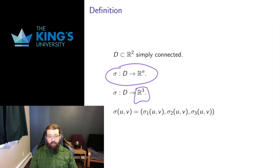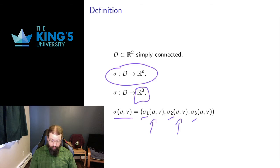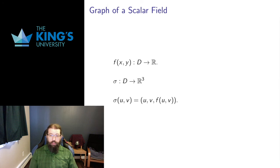We're basically going to work in R3 all the time. The definition works in Rn, but the constructions and applications I care about are only in three dimensions. I'll use sigma to refer to these surfaces the same way I use gamma to refer to curves. U and v are the typical parameters — I have two parameters now instead of one, so there's no single parameter t for time. In R3 I have three components: the x coordinate, the y coordinate, and the z coordinate. The parametric surface sits in R3 with x, y, and z depending on the values of u and v.